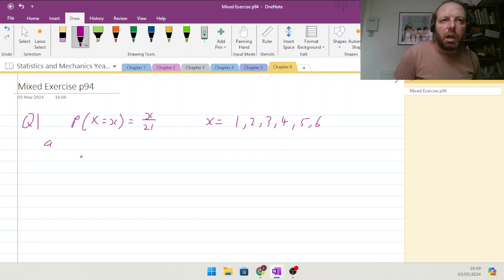Construct a table giving the probability distribution of x. So, we have got x, and we have got the probability of x, and that's going to be quite simply, given our x's.